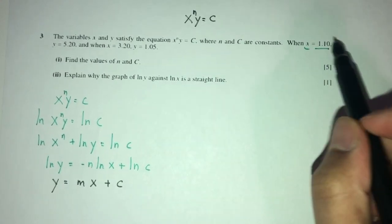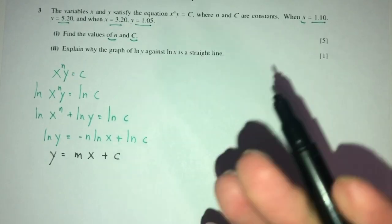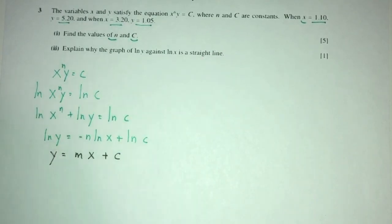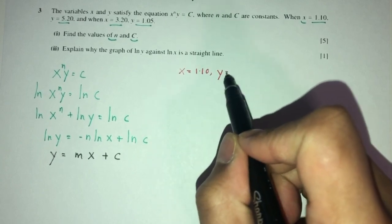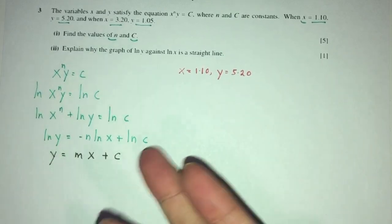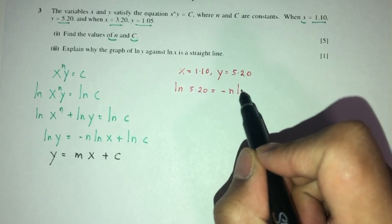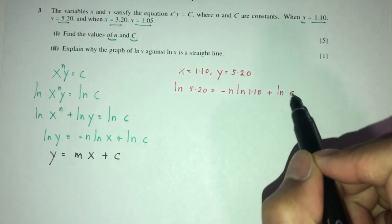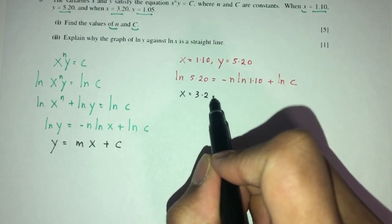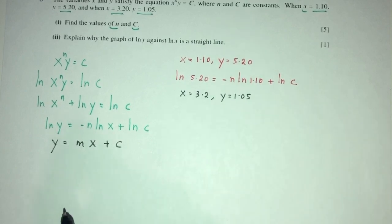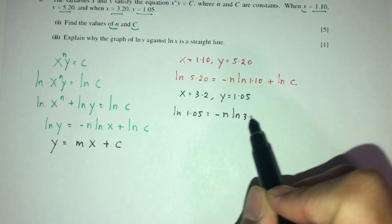Using the two given data points to form simultaneous equations: when x = 1.1, y = 5.2, so ln(5.2) = −n·ln(1.1) + ln(c). When x = 3.2, y = 1.05, so ln(1.05) = −n·ln(3.2) + ln(c). We have two equations with two unknowns: n and ln(c).